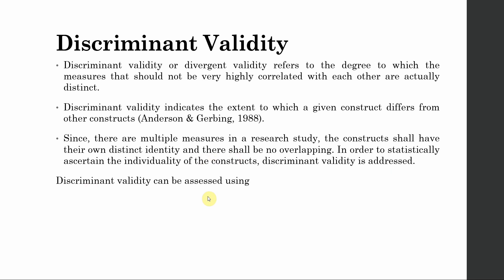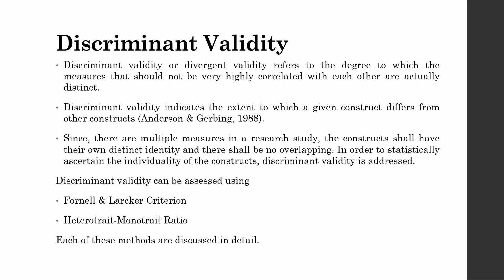Discriminant validity can be assessed using Fornell and Larker criterion, the traditional measure, and the new criterion that is the Heterotrait-Monotrait ratio. Each of these methods will now be discussed in detail.